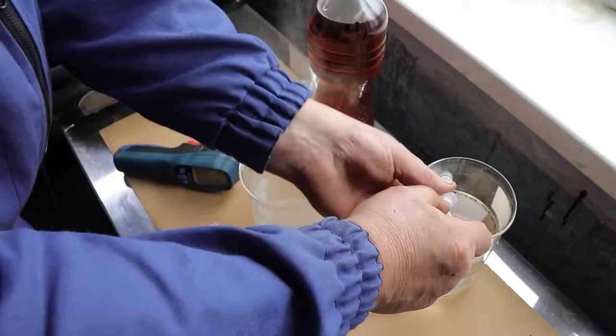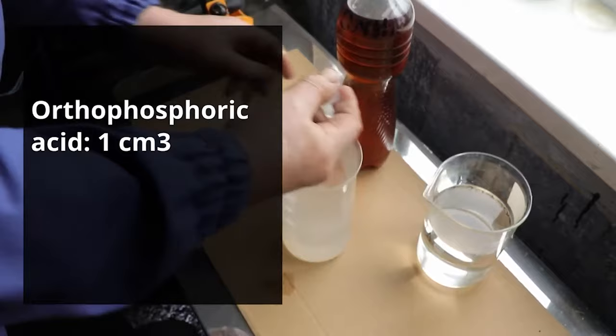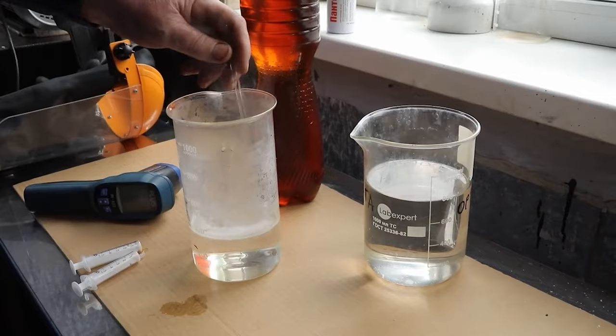After that, we take 1 cubic centimeter of orthophosphate acid, add it to the mixture of water and emulsifier, and mix it all again.